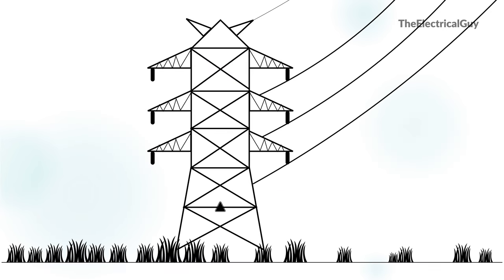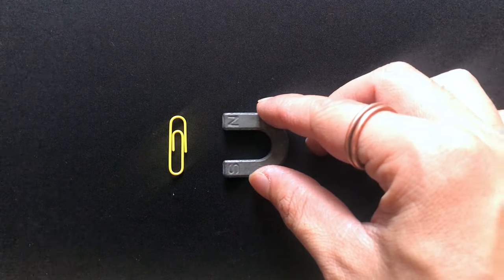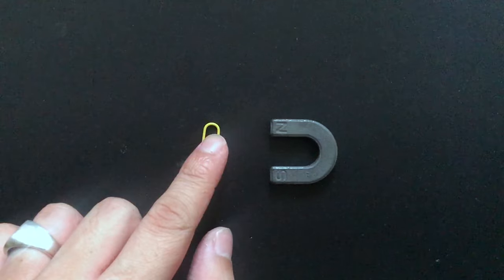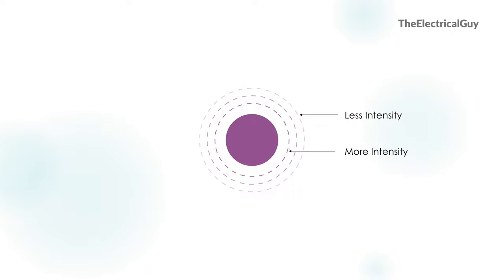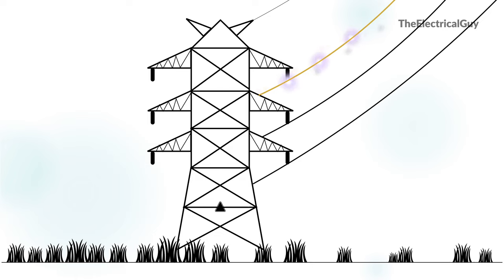The same thing happens with transmission lines carrying high and extra high voltage. The only difference is the distance between the two conductors is more. When the conductor is carrying high or extra high voltage, the air surrounding the conductor becomes ionized due to the electric field around it. Intensity of the electric field is maximum at the surface of the conductor and decreases as we move away — just like a magnet and a metal clip, where force is greatest up close and decreases with distance. As the intensity at the surface is maximum, the air near the surface will become ionized. If the electric intensity is high enough, due to the breakdown of air, a faint violet glow will appear and at the same time a humming noise will be heard. This is nothing but the corona in electrical engineering.